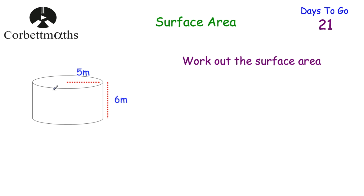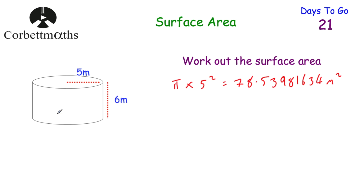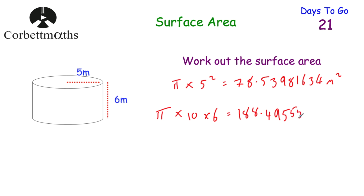To find the area of the curved face, we find the circumference and multiply by the height. Let's start with the area of the circle using πr²: π multiplied by 5 squared = 25π, or as a decimal 78.5398 metres squared. That's the area of the top and also the bottom. For the curved face: circumference = π × diameter = π × 10, then multiply by the height which is 6, giving 60π or 188.4956 metres squared.